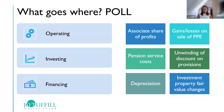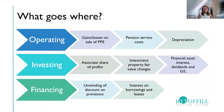Considering what goes into operating, investing and financing: gains and losses on the sale of property, plant and equipment are operating because you're selling assets used in the business, not assets held for investment. Depreciation is also operating. Pension service costs are effectively employee benefits and are therefore operating.